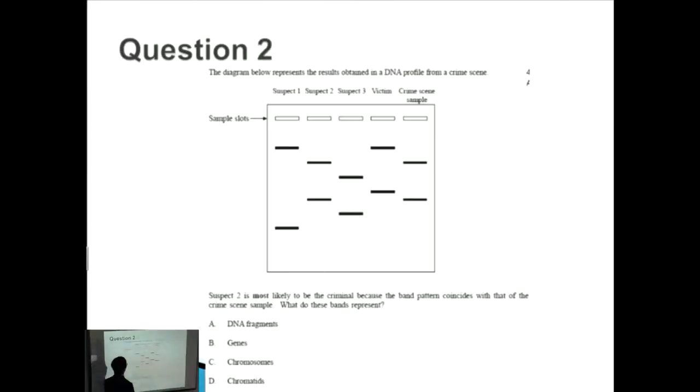Let's look at question two. The diagram represents results obtained in a DNA profile from a crime scene. Suspect two is most likely to be the criminal because the band pattern coincides with that of the crime scene sample. That's correct. What do these bands represent? This is a gel from gel electrophoresis and represents DNA fragments. The ones which are further away are smaller.